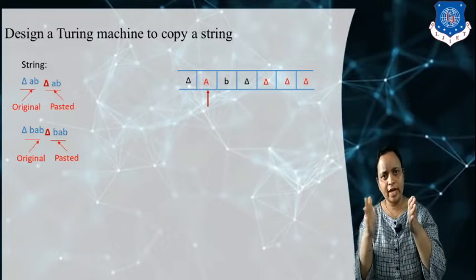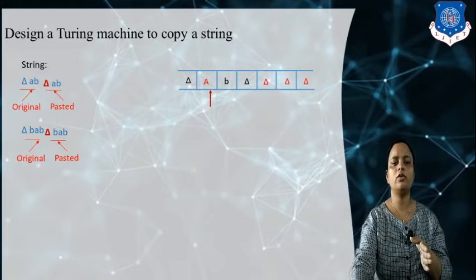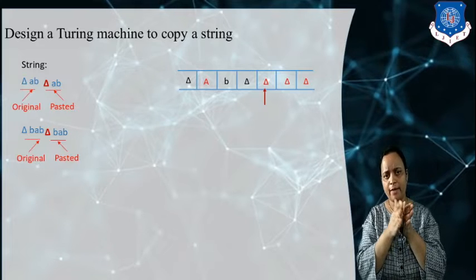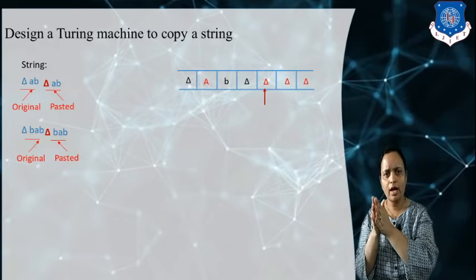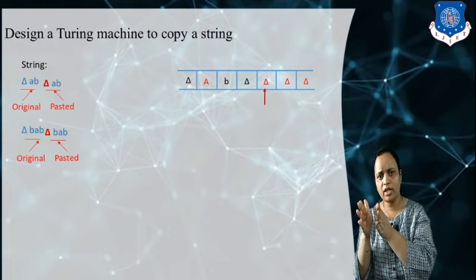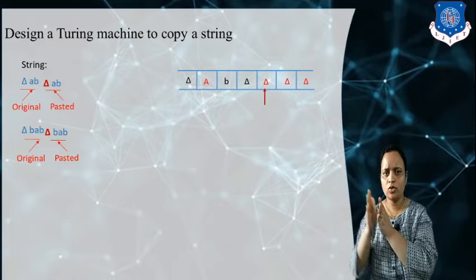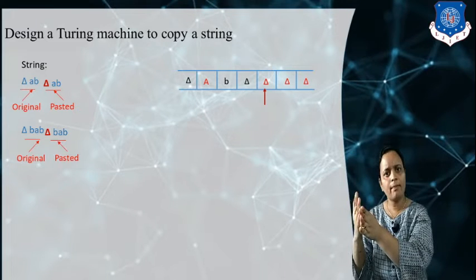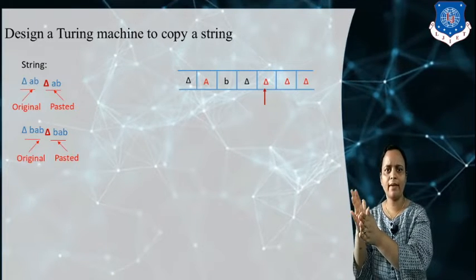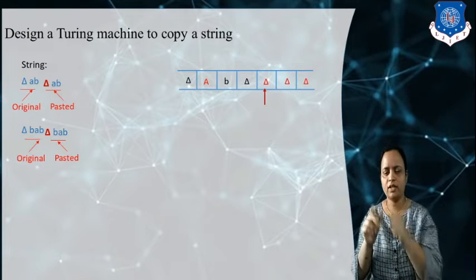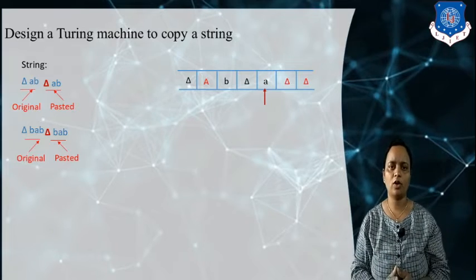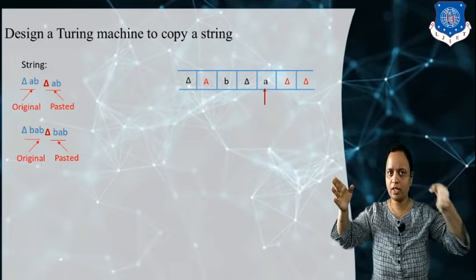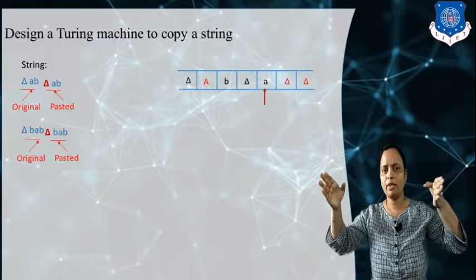After marking small a as capital A, the tape head moves to the right side to find the empty cell. When reaching the right end of the string, the tape head moves further right to the empty cells denoted by delta. Now it starts pasting the duplicate characters. The delta is replaced by small a, because we read the symbol a and we need to copy that symbol.